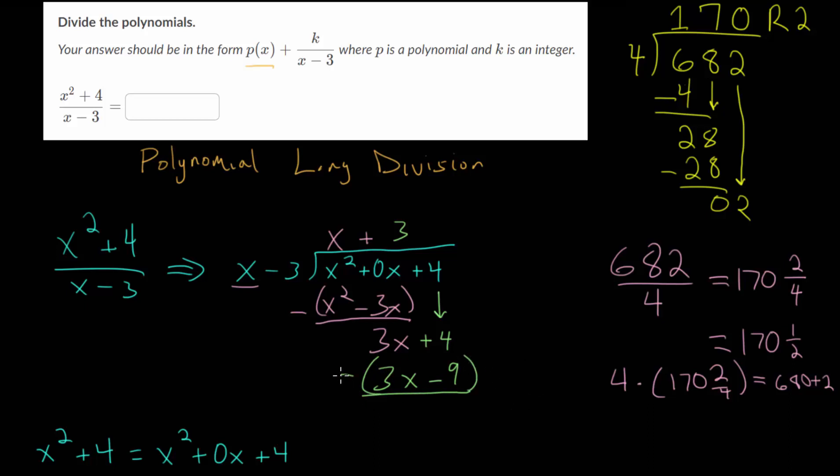3x minus 3x, that's 0x, which is what we should expect. Then we have positive 4 minus negative 9, or plus 9, which is positive 13. Since we have no numbers left to bring down, this is our remainder. Remember, you put your remainder over your divisor, over that linear factor. This is k from our problem. So we get plus 13 divided by x minus 3.